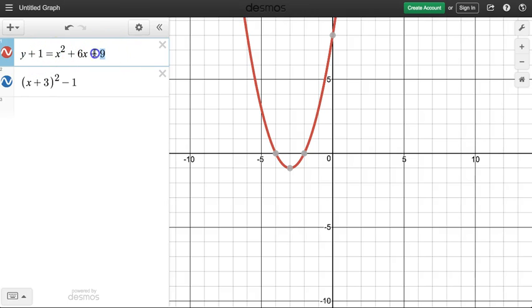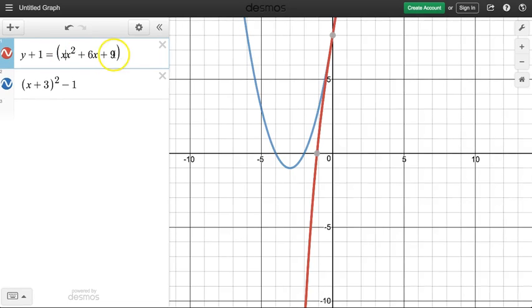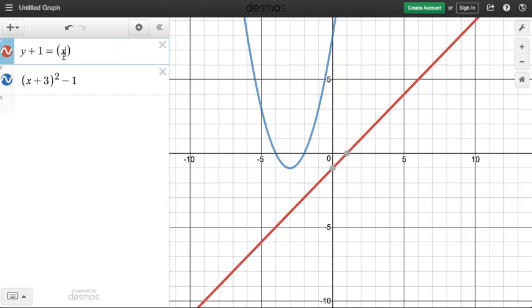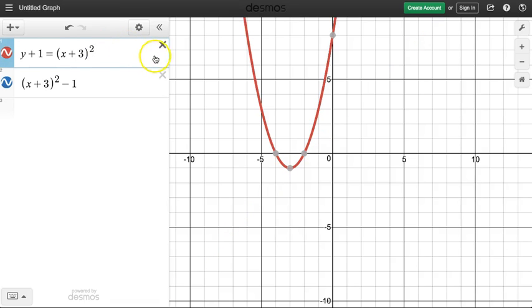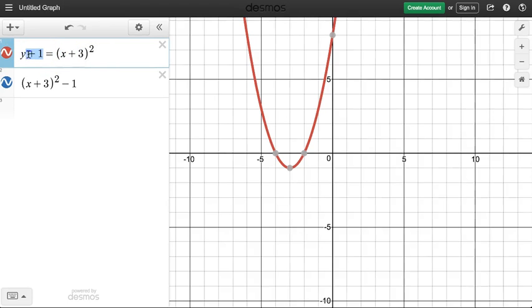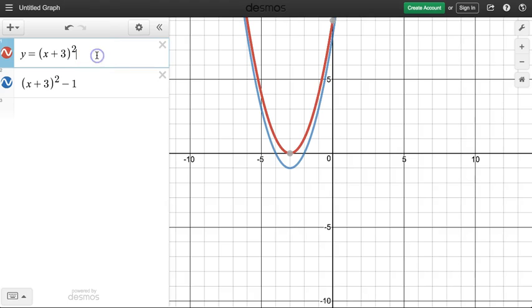Now if I were to complete the square, I could rewrite this as x plus 3 squared. If I were to write it over, I would subtract 1 from both sides, so minus 1, minus 1. So vertex form comes from completing the square.